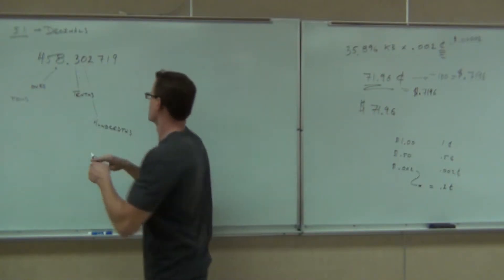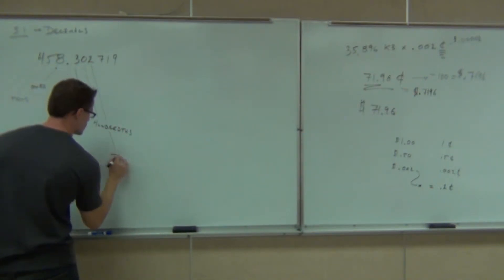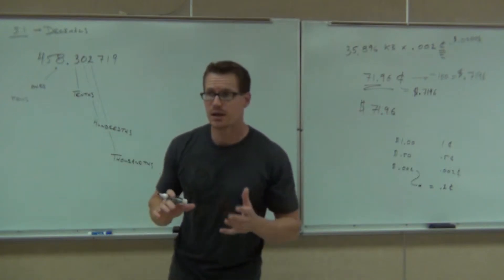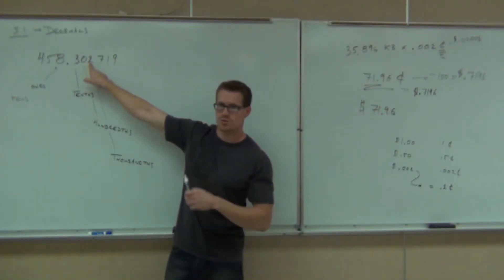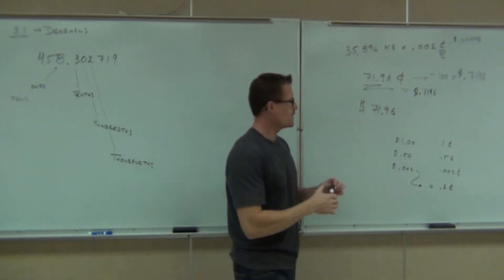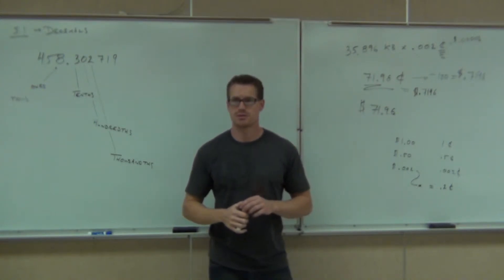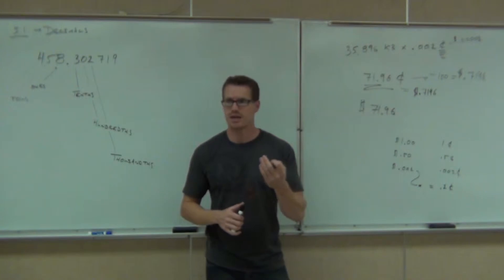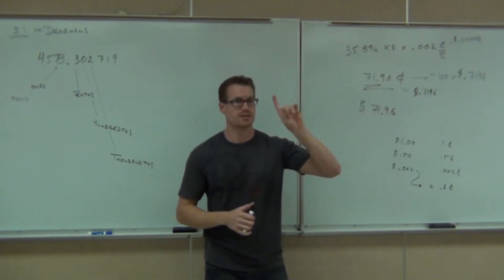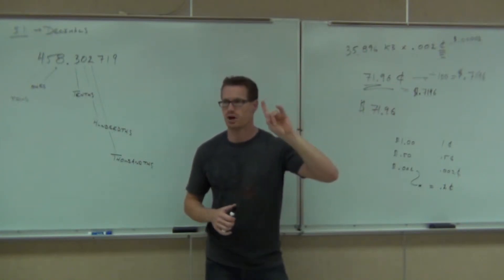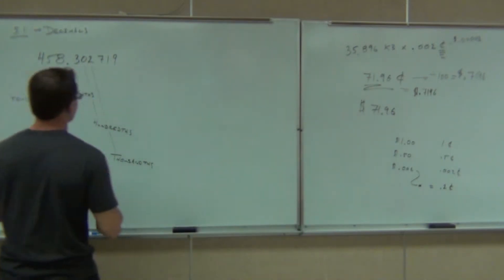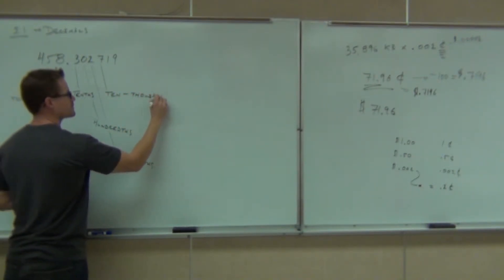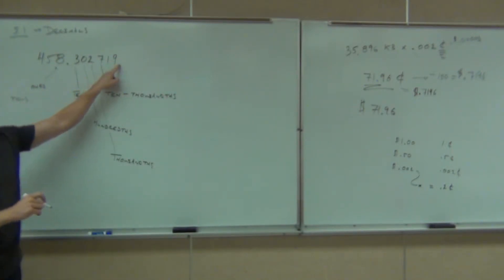What do you think the next one's going to be? Thousandths mean that it takes a thousand of the value in this place value to reach one. Remember when that woman was talking about .002 cents? She was talking about two thousandths of a cent — it would take a thousand of those to make one cent. She was converting and saying a thousand of those would make one dollar, but she was still talking about cents. She didn't know it. The next one likewise — ten thousandths, then hundred thousandths, then millionths.